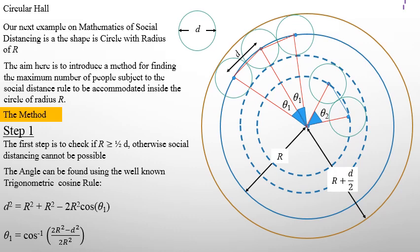The next very interesting case is a circular hall. This needs a little deeper understanding. I introduced a number of steps in my method. Step 1: we need to check first if R is greater than or equal to half D. If R is smaller than half D, it means this is a very small room, which is not realistic, and we can only accommodate one person — there is no need to continue the analysis. Here we assume R is much greater than half D.